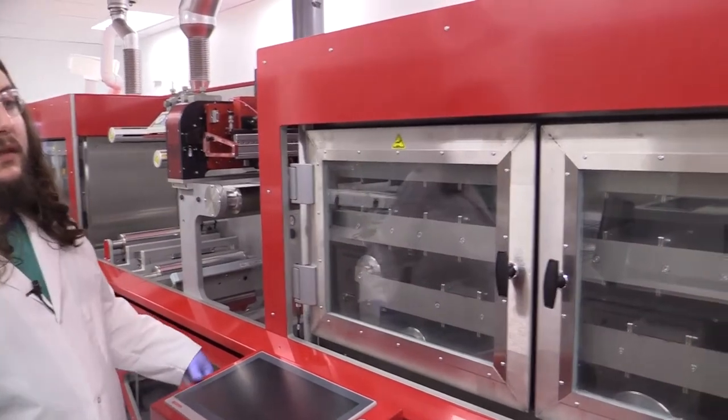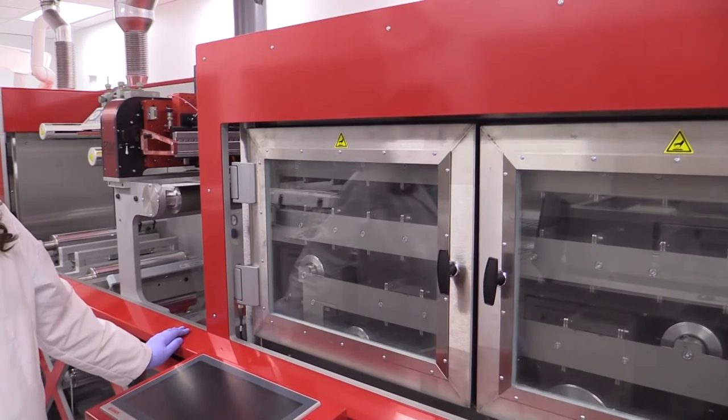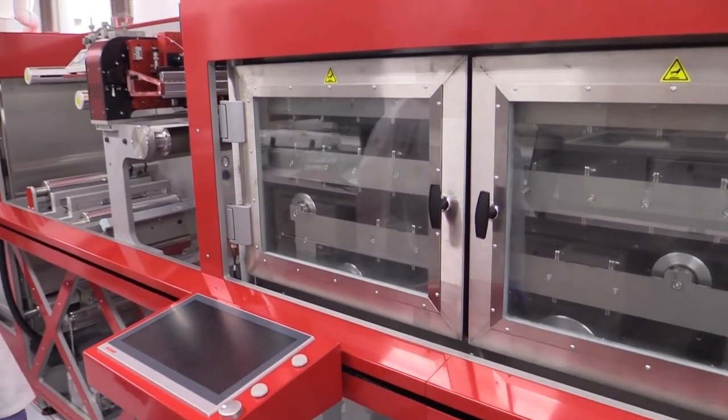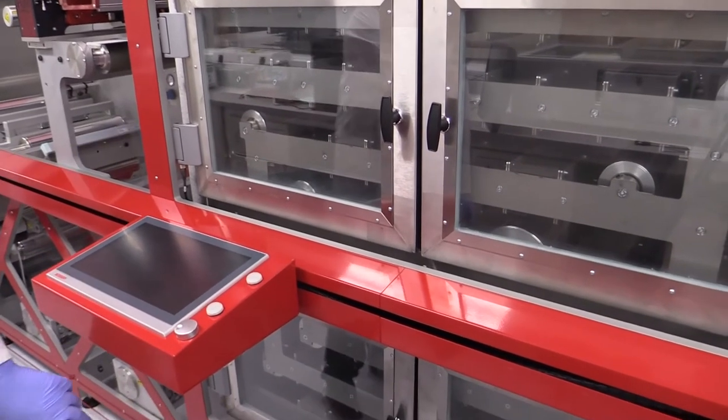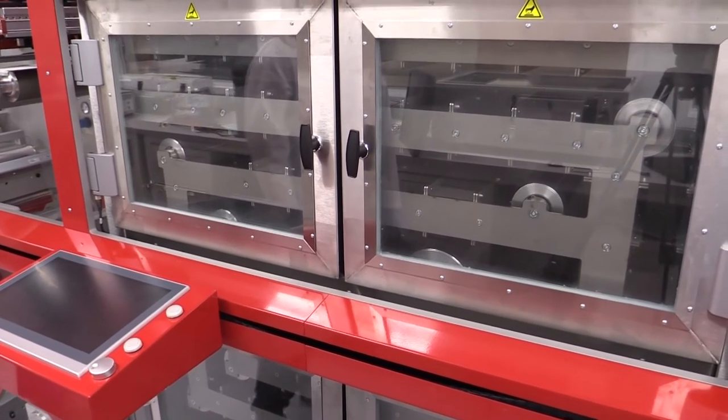Once again after printing in a slot die coating system we need to dry and anneal our films so we pass through a second 12 meter oven following the same spiral path allowing for maximum residence time in this setup.